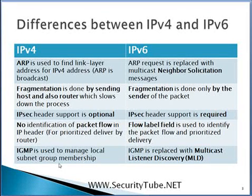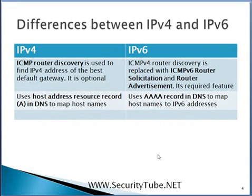In IPv4, IGMP was used to manage local subnet group memberships. This is replaced in IPv6 with Multicast Listener Discovery, or MLD. Additionally, ICMP Router Discovery was the mechanism in IPv4 to find the address of the best default gateway, but it was optional and rarely used. In IPv6, ICMPv6 Router Solicitation and Router Advertisement are used to find the best default gateway's IP address, and this feature is mandatory.